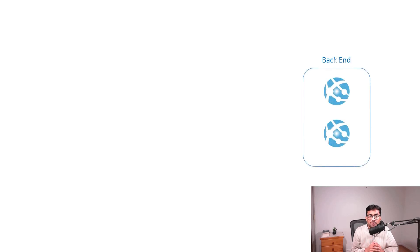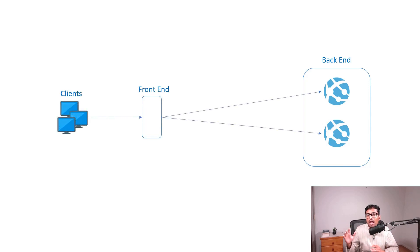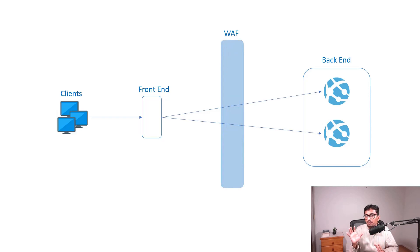You have a web app or API and you are running multiple instances of your app in different regions. You are looking for a single frontend through which your clients can reach your backend instances, unaware of how many instances you are actually running. And you are looking for a web application firewall which can protect your backend services from HTTP attacks.